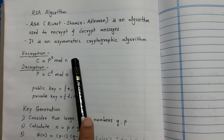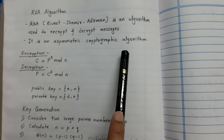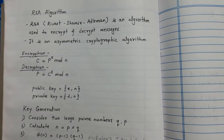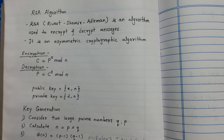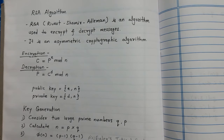RSA is an asymmetric cryptographic algorithm. In an asymmetric algorithm, we use a private key and a public key for encryption and decryption. Both sender and receiver use private key and public key. While in a symmetric algorithm, we have only one key for encryption and decryption. So till now we have seen symmetric algorithms; here we are going to see one asymmetric algorithm, that is RSA.